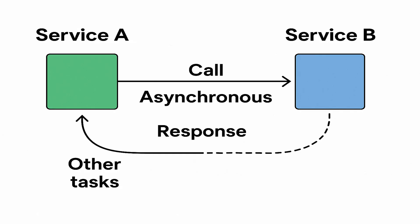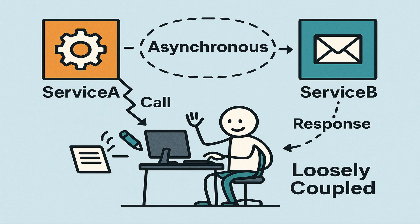Service A is free to perform other tasks and when service B is ready with the response, service A will process it. This makes the system loosely coupled. So service B can take as much time as it needs to process and generate the response, and service A will not be blocked.